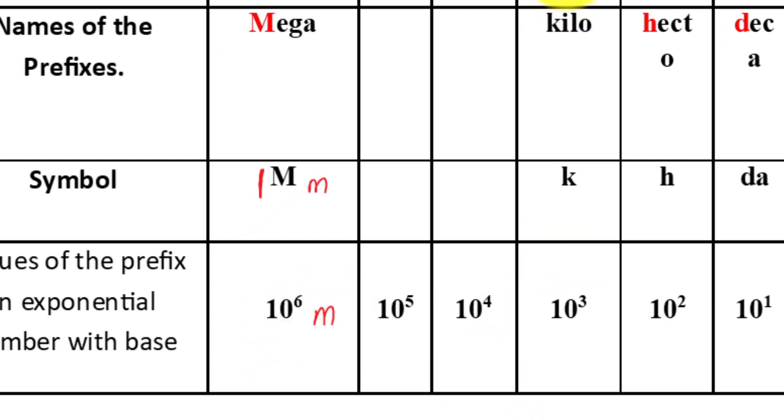Now let's move on to kilo. One kilometer equals ten to the third meter. Hecto: one hectometer equals ten to the second meter.